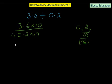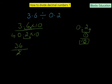Multiplying 3.6 by 10 moves the decimal one place to the right, giving us 36. Multiplying 0.2 by 10 also moves the decimal one place to the right, giving us 2. Now the case is very simple — we just divide: 36 divided by 2 is 18. So the answer is 18.